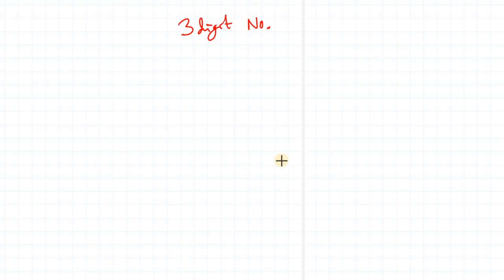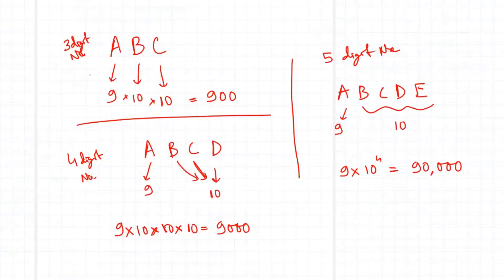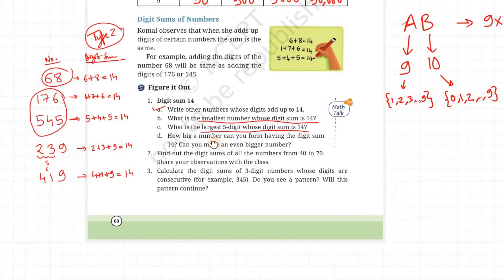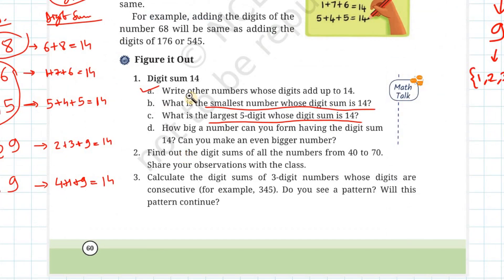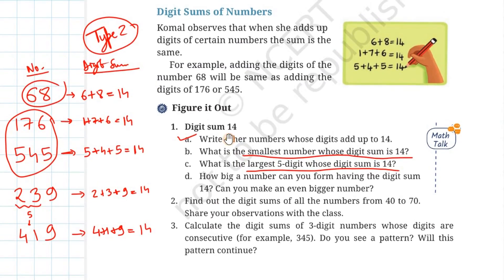Students, carefully observe this. Till now we have considered the type 1 question, which is digit counting, covering 2-digit, 3-digit, 4-digit, 5-digit numbers and so on. Now we will consider the type 2 question, which is basically the digit sum of numbers.